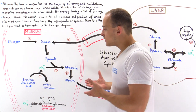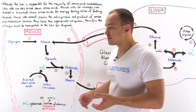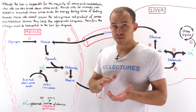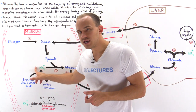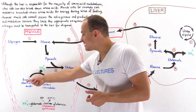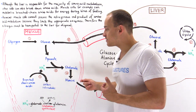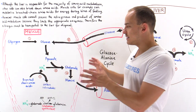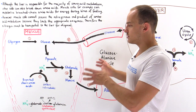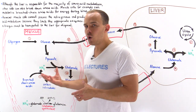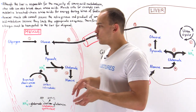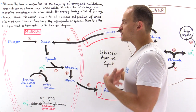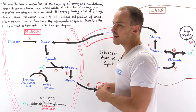Every time we metabolize amino acids, we form nitrogen as a byproduct — more specifically, we form ammonium. As this process continually takes place, we build up the amount of ammonium present inside our skeletal muscle cells. Ammonium is toxic, so the skeletal muscle cells must be able to dispose of it.